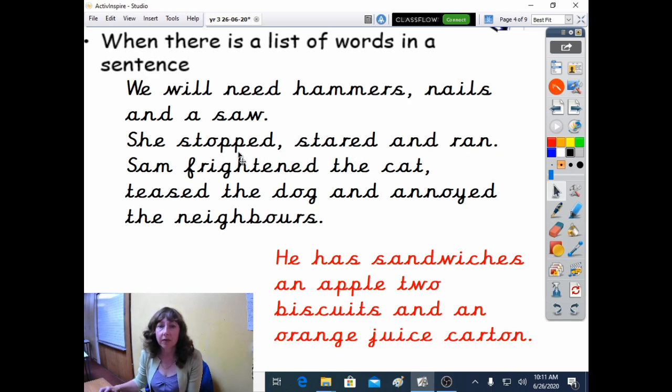So here's another example. She stopped, stared, and ran. So this is a list of things that somebody is doing. So she's stopping, she's staring, and then on she goes.